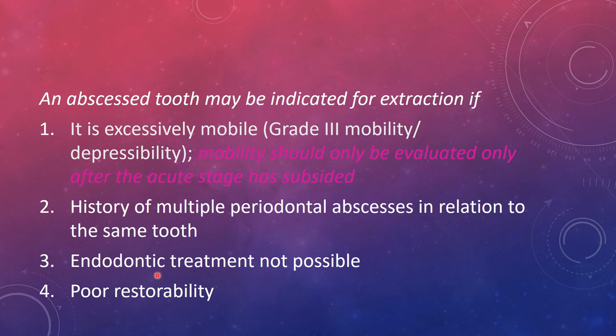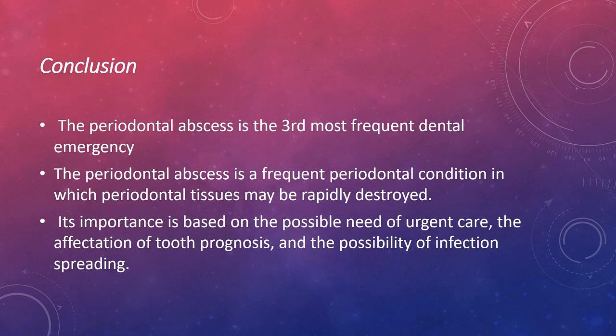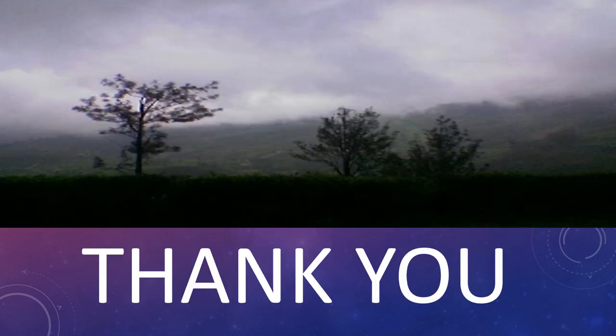An abscessed tooth may be indicated for extraction if it is excessively mobile with questionable prognosis — mobility should only be evaluated after the acute stage has subsided — if there is a history of multiple periodontal abscesses in relation to the same tooth, if endodontic treatment is not possible, or if there is poor restorability. In conclusion, periodontal abscess is the third most frequent dental emergency. It is a frequent periodontal condition in which periodontal tissues may be rapidly destroyed, and its importance is based on the possible need for urgent care, the effect on tooth prognosis, and the possibility of infection spreading.